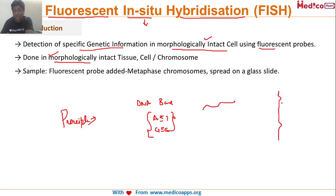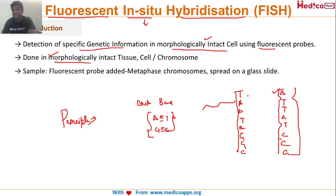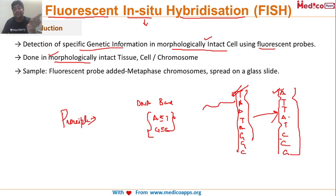The principle: we create a probe with a complementary sequence to the DNA we want to identify. For example, if we want to find a sequence ATTATCCG in a chromosome sample, we design a probe with the complementary sequence. This probe is tagged with a fluorescent dye. If the target sequence is present in the chromosome, the probe will attach there, and we can identify it under a fluorescent microscope.